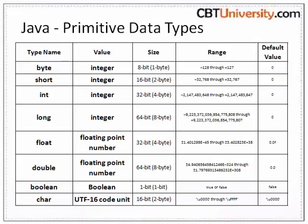Integer: the integer data type is a 32-bit signed 2's complement integer. Integer can hold integers only, not like double which can hold integers. Double: the double data type is for holding decimal values, for example 2.6, 10.8, or 12. Even 12 is valid as 12 is nothing but 12.0.